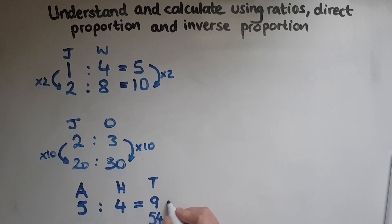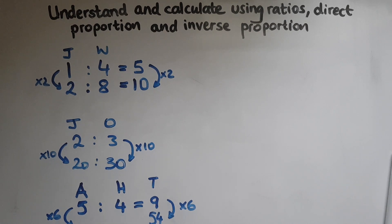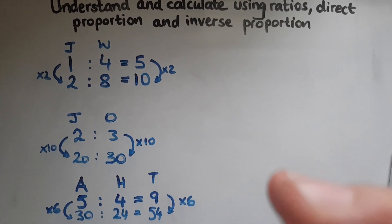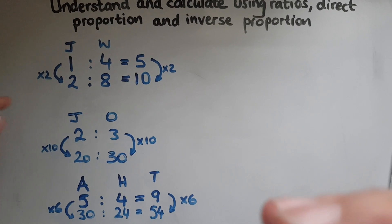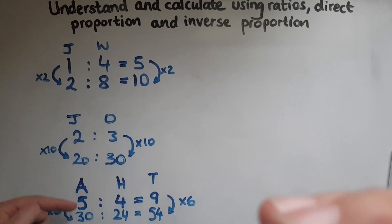To get from nine to 54, we multiply by six, so this has gone six times bigger. These must be multiplied by the same number as well. Five multiplied by six is 30, and four multiplied by six is 24. Does that add up to the total? 30 and 24 gives us 54, so we've shared it correctly. We've used the ratio and increased these in direct proportion.